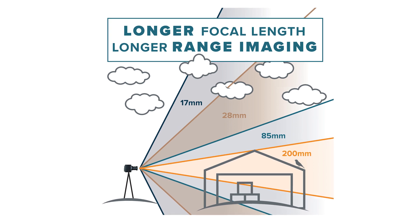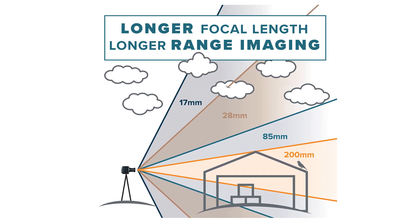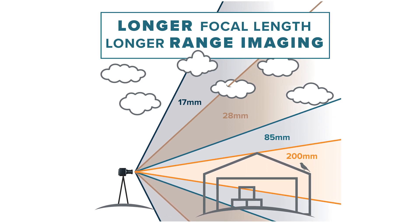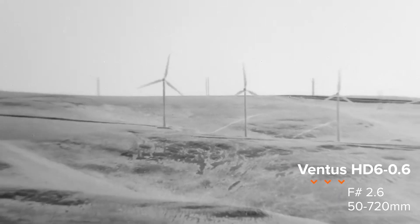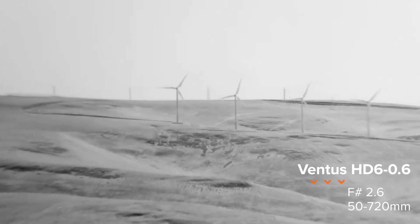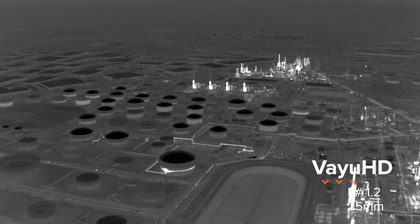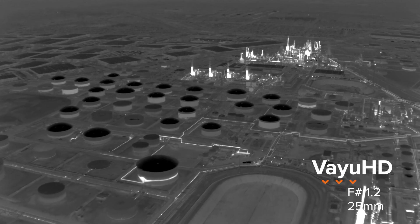It's always a ratio of the diameter of the optic, the light collection efficiency, and the focal length — the reach you want to get out of a lens, how far away you want to see. Longer focal lengths give you longer range imaging. Shorter focal lengths are generally wide field-of-view applications used for short range imaging.